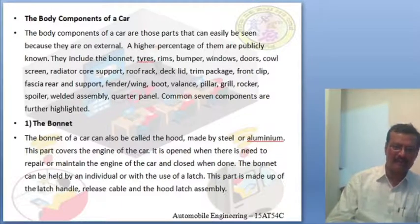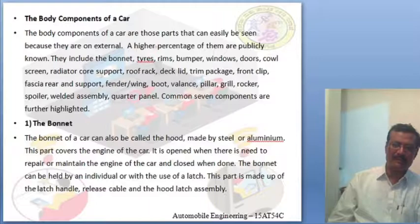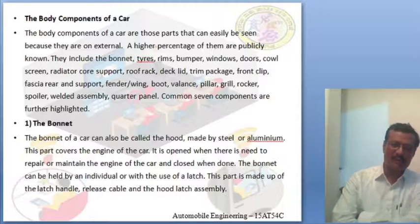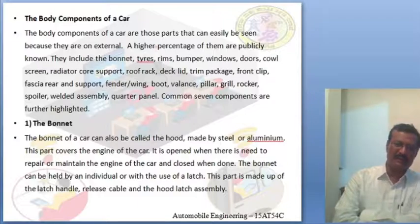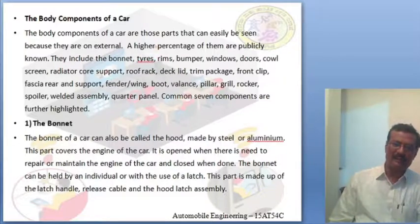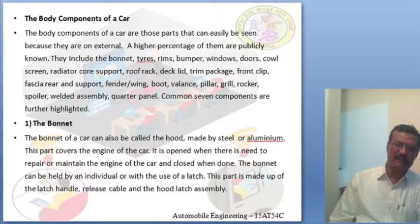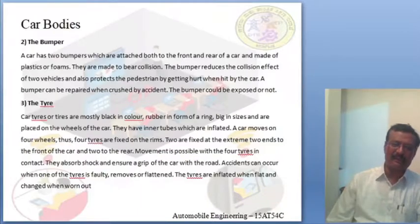The bonnet of a car is made up of steel or aluminium. It is the cover that protects the engine. The main purpose of the bonnet is to protect the front of the car and the engine assembly, and it is opened when repair or maintenance of the engine is needed. The bonnet can be held open individually or with a latch, and it uses a latch handle, release cable, or hood latch assembly to operate.